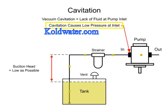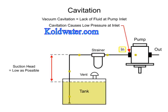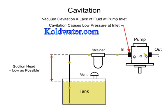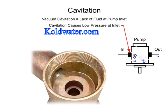Cavitation causes a drop in pressure at the pump inlet. When the pressure at the pump inlet drops below the vapor pressure of the liquid, vapor bubbles form and the fluid appears to boil. When the bubbles collapse, they can damage the pump by removing small pieces of metal. This is called pitting and can cause permanent damage to the pump.